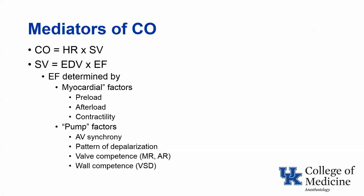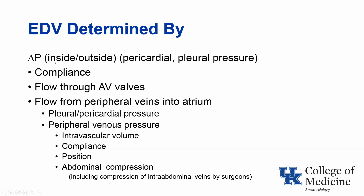The mediators of cardiac output are heart rate and stroke volume. Stroke volume, in turn, is the product of end diastolic volume and ejection fraction. Ejection fraction is determined by myocardial factors including preload, afterload, and contractility, and by pump factors such as AV synchrony, pattern of depolarization, valve competence, and wall competence. End diastolic volume is determined by the change in pressure inside versus outside of the ventricle—the outside being pericardial or pleural pressure—and is also influenced by compliance of the ventricle, flow through the AV valve, and flow from the peripheral veins into the atrium. The latter is influenced by pleural and pericardial pressure, peripheral venous pressure, intravascular volume, compliance, position, and abdominal compression.